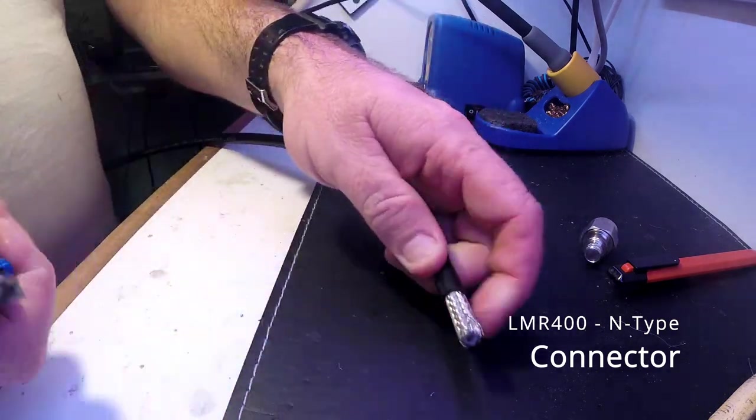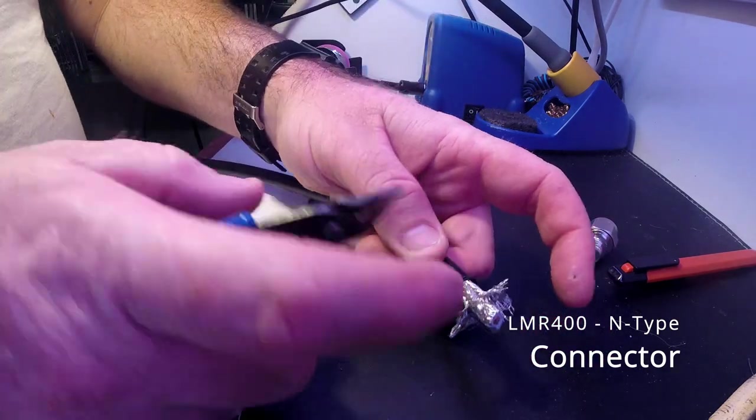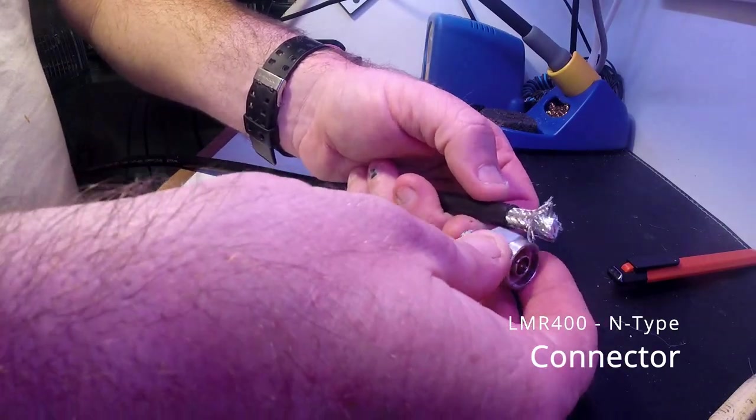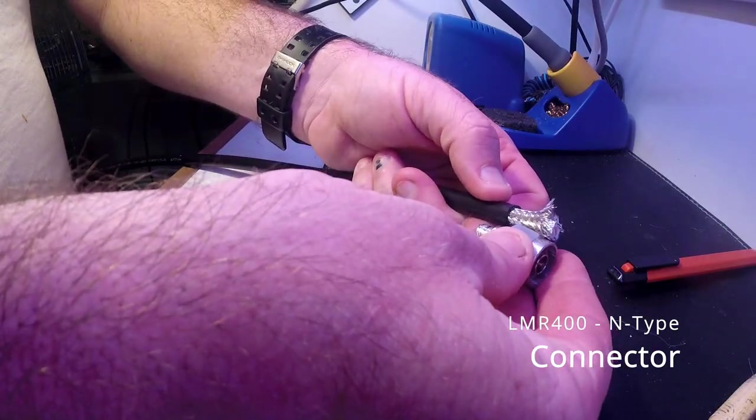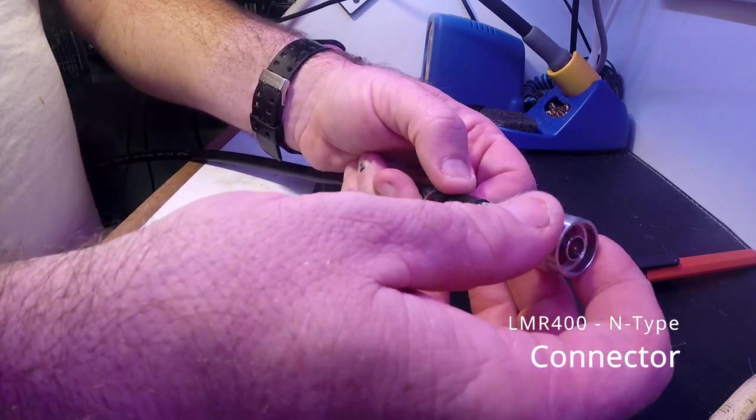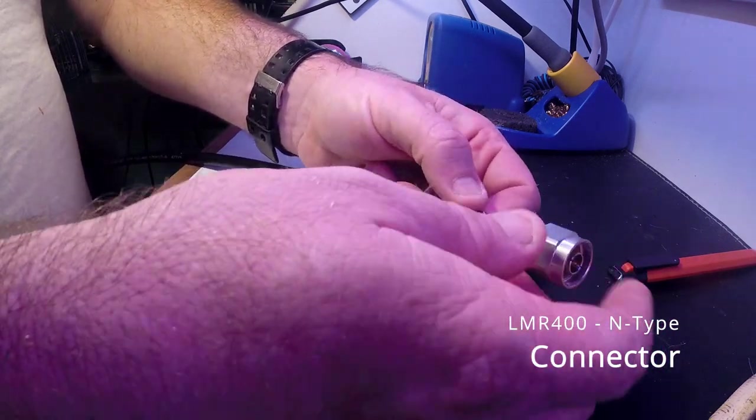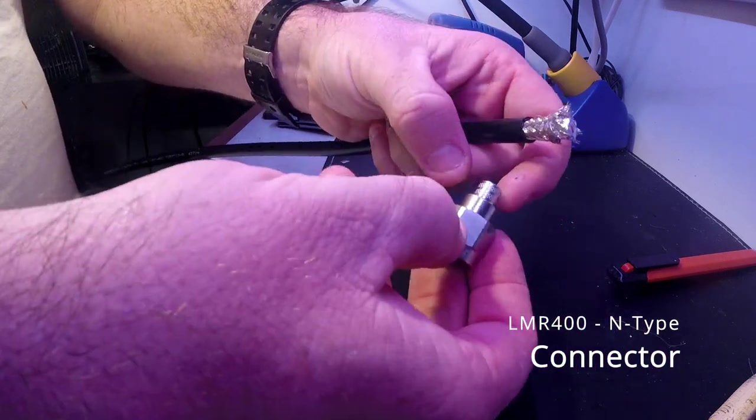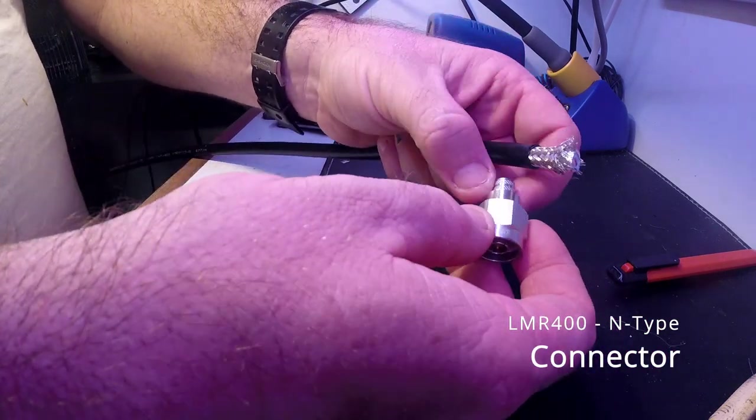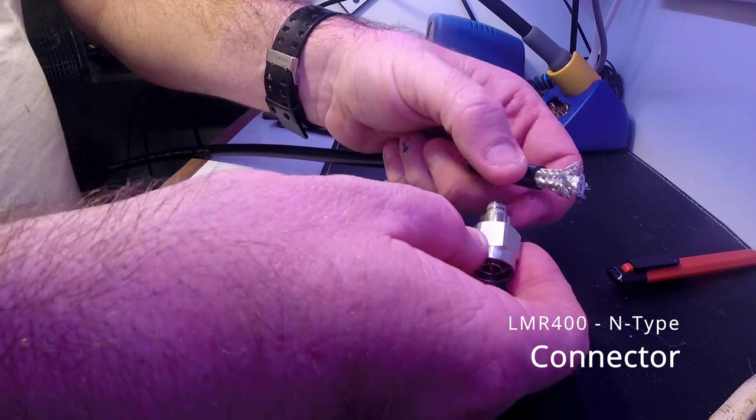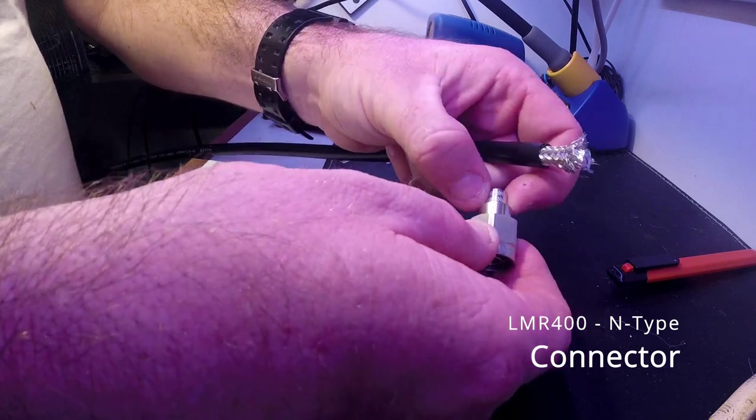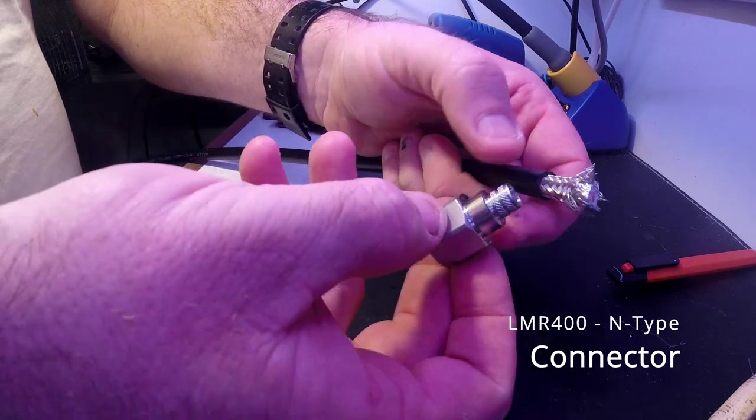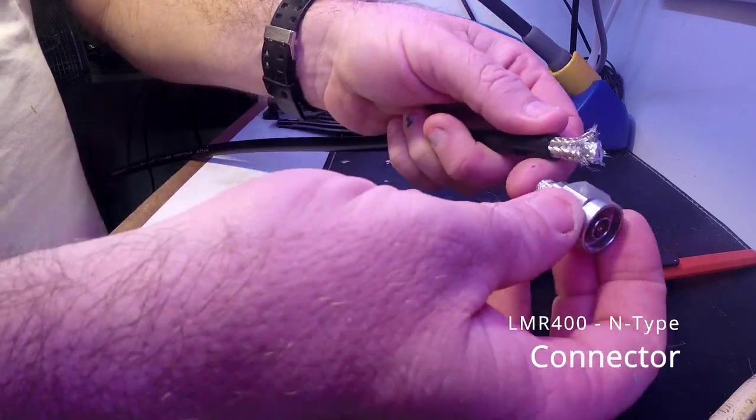And like we did with the PL259, basically we want enough braid here to go over the end there. So when we put this connector on, you only need enough to cover that small section. Because that collar is going to clamp down on the braid and then onto this section of the connector. So we want exactly that amount of braid.